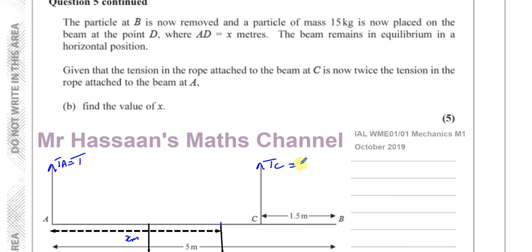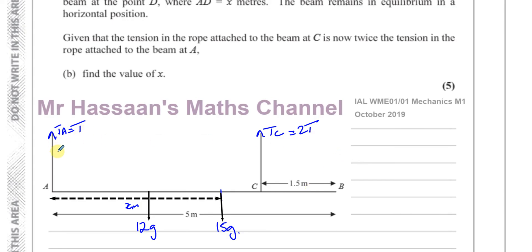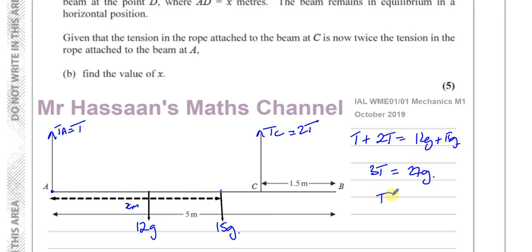We're told the tension in rope C is twice the tension in rope A. Let TA = T, so TC = 2T. Using vertical equilibrium: T + 2T = 12G + 15G, so 3T = 27G, giving T = 9G. Therefore TA = 9G and TC = 18G, with 27G acting upward and 27G acting downward.